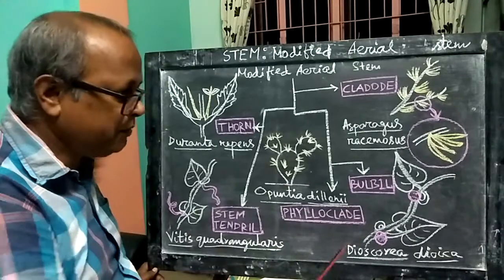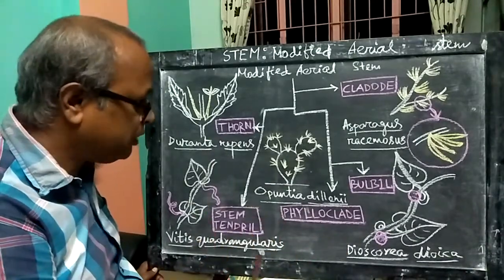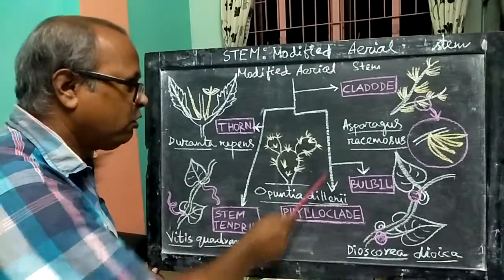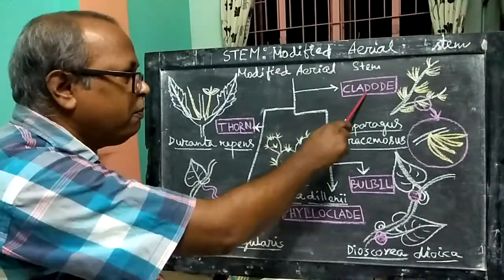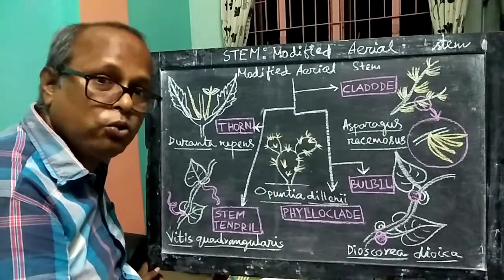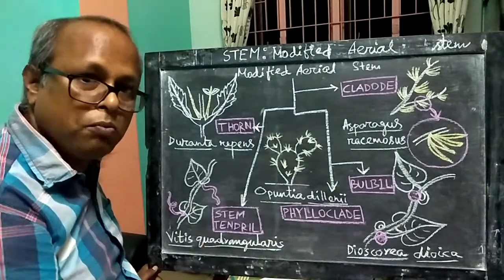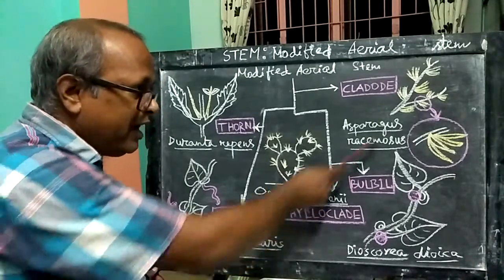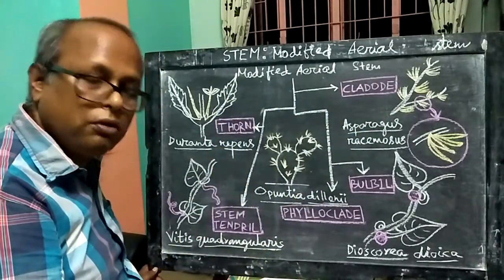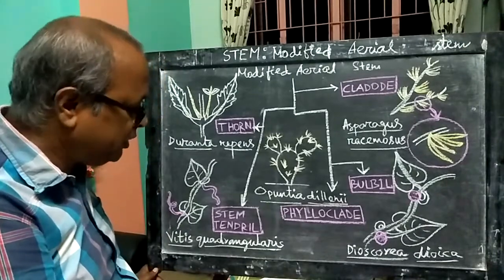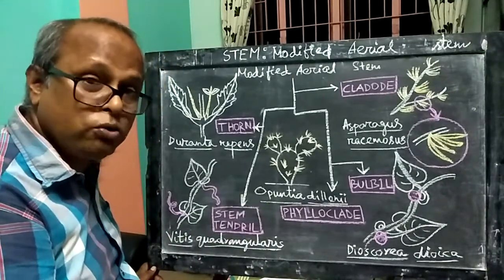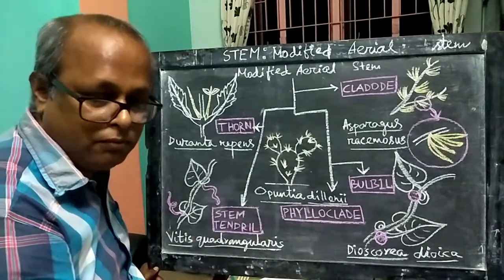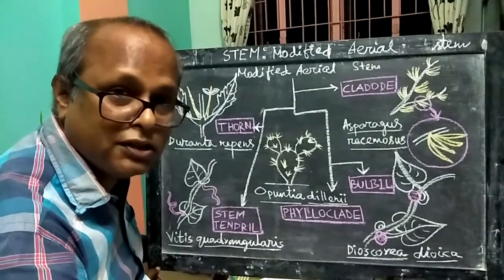So this is the modification of the aerial stem. The phyloclad and the cladode are related but the same concept. The most important thing about this topic is the spelling of the scientific names. Let's get started with the next section.